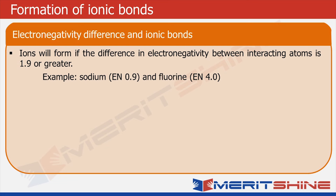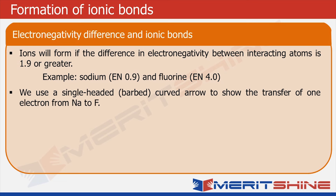For example, sodium has an electronegativity of 0.9 and fluorine has an electronegativity of 4.0, both on the Pauling scale. We can clearly see this will form an ionic bond, as 4.0 minus 0.9 equals 3.1, which is greater than 1.9. Let us try to show this reaction using a Lewis dot structure.